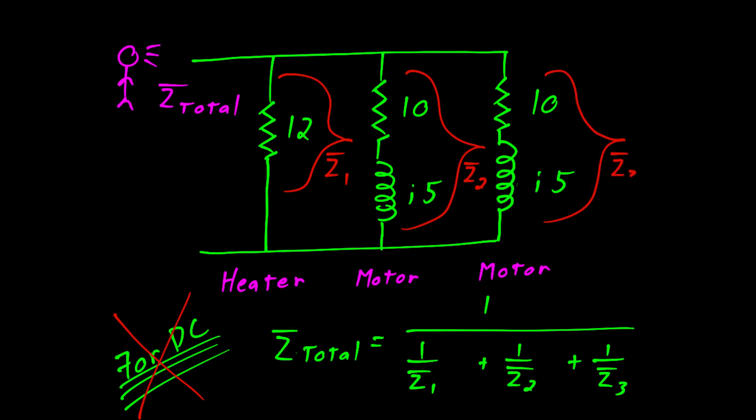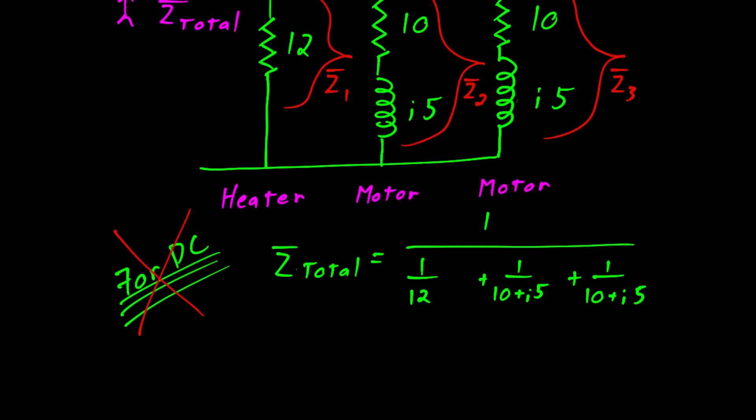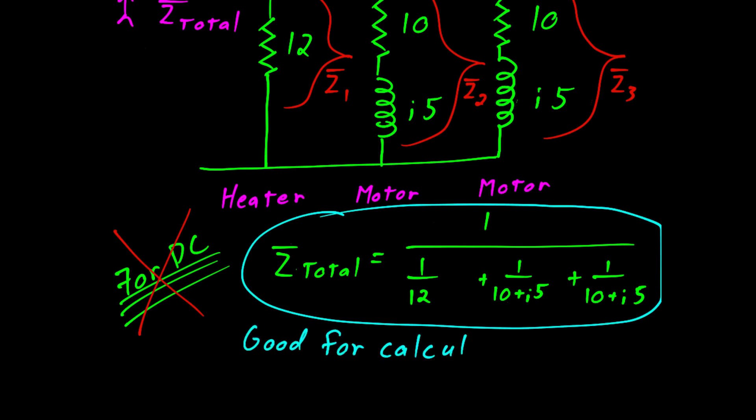So now we can place these in our circuit. So it becomes 1 over 1 over 12 plus 1 over 10 plus J5 plus 1 over 10 plus J5. If you have the right calculator, this might be all you need to do. There are several calculators out there that allow you to do complex numbers directly, and you can calculate the reciprocal of impedance very quickly using the 1 over X key.